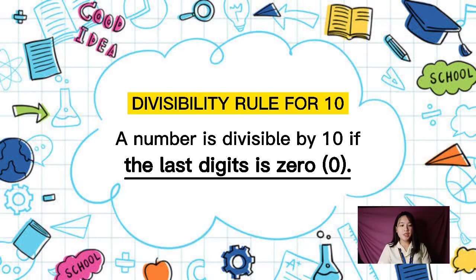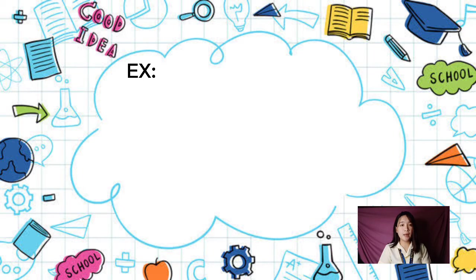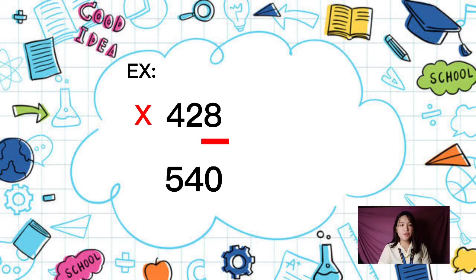A number is divisible by 10 if the last digit is 0. For example, 428 is not divisible by 10 because the last digit is 8. On the other hand, 540 is divisible by 10 because the last digit is 0.